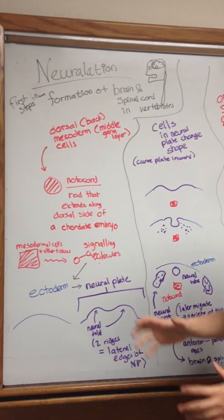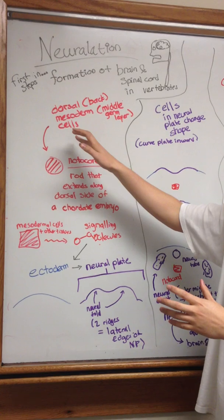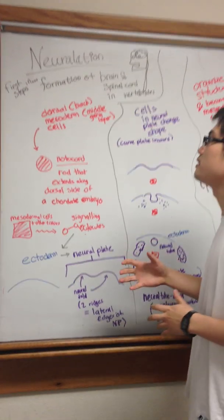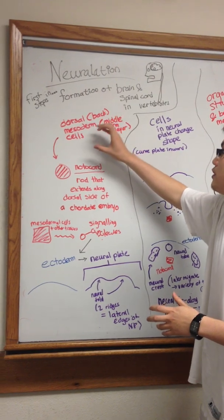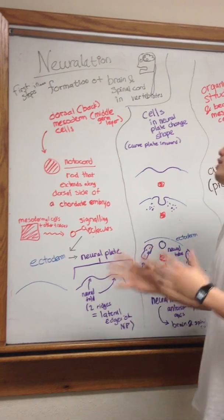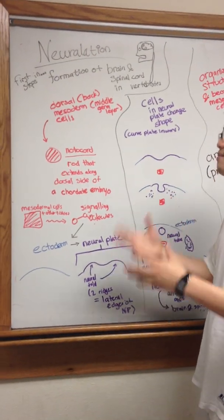We first begin with dorsal mesoderm cells - dorsal meaning the backside and mesoderm meaning the middle germ layer. These mesoderm cells form what we call the notochord. The notochord is a rod that extends along the dorsal side of a chordate embryo.